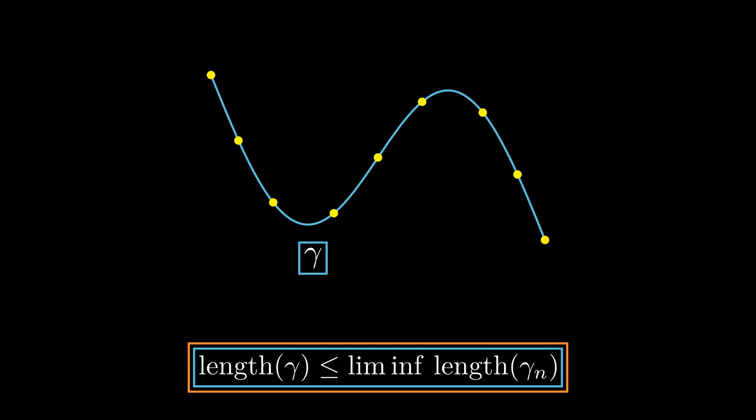This happens to be very easy, since all of the curves have the same domain. A partition of γ yields a partition of γ₁, a partition of γ₂, and so on, and these partitions give broken lines inscribed in the sequence of curves that converge to the broken line inscribed in the curve γ. So the lengths of the elements of the sequence are at least as large as the lengths of these broken lines, giving the result.